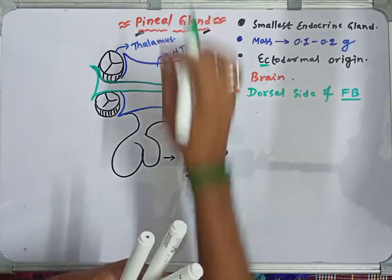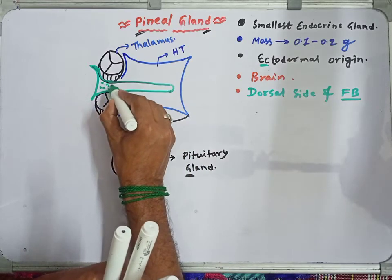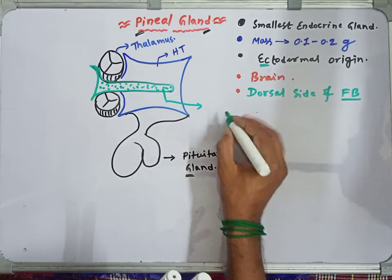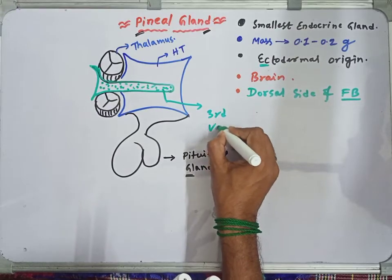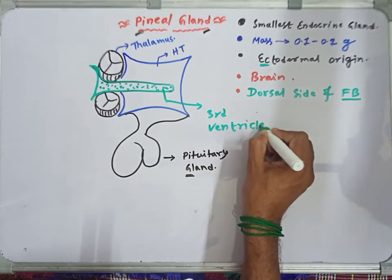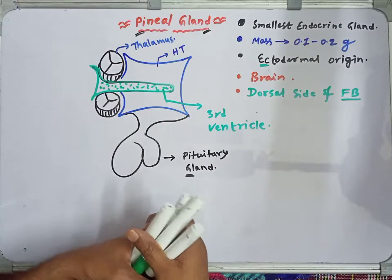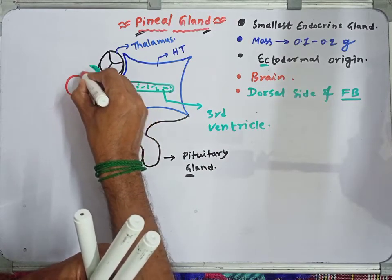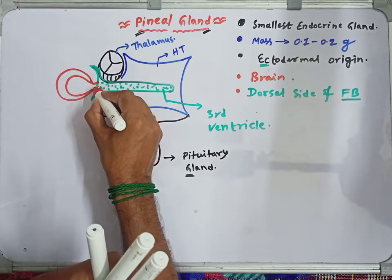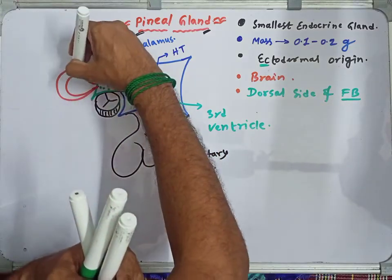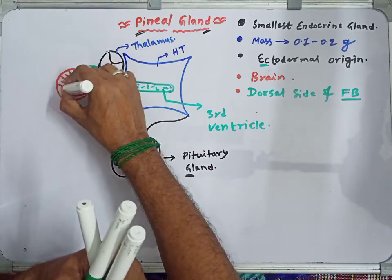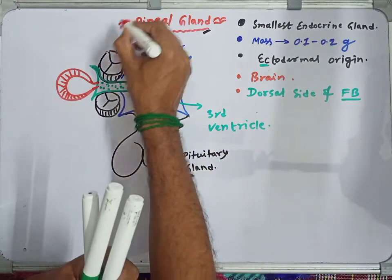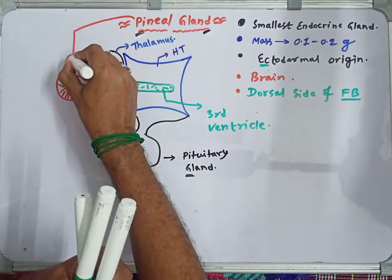There is a fluid-filled cavity that runs between the two thalami and divides the hypothalamus into two parts. This fluid-filled cavity is called the third ventricle. From the base of this third ventricle, the pineal gland protrudes out — projects out. This structure that you can see here, protruding from the base of the third ventricle, is your pineal gland.